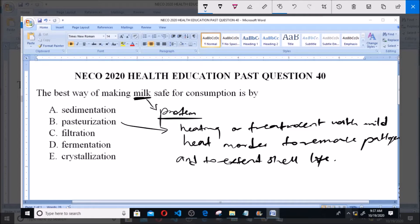But if you look at option A, option A says sedimentation. Sedimentation is a process for purifying water, water purification, where water is passed over fine beds of particles in order to sediment these particles present in the water.